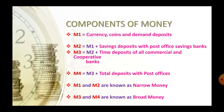Time deposits with commercial banks include fixed deposits and recurring deposits — all time deposits of commercial and cooperative banks. M4 is equal to M3 plus total deposits with post office, meaning post office time deposits and recurring deposits are included, but excludes national savings certificates.